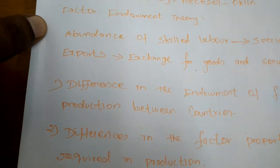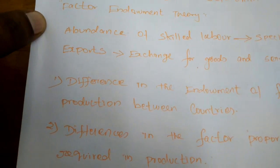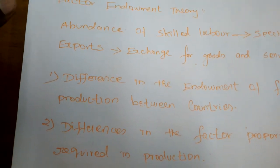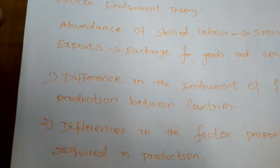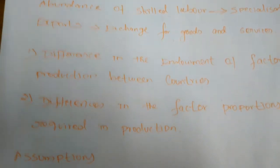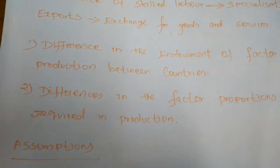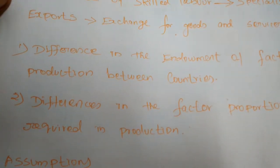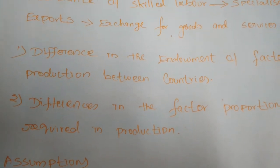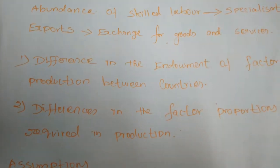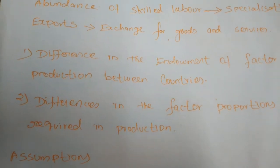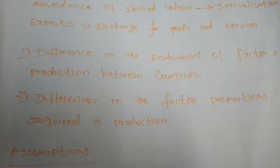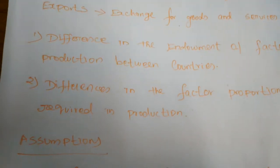The classical theory argued that the basis for foreign trade was comparative cost difference and it considered only the labor factor. But the modern theory of international trade explains the causes for such comparative cost differences — how comparative cost differences are created or arise. This theory explains two reasons for international differences in comparative cost.